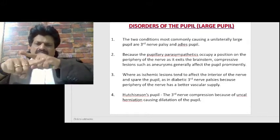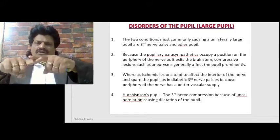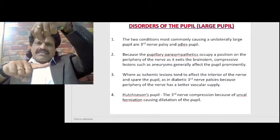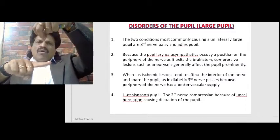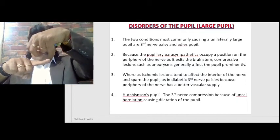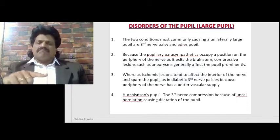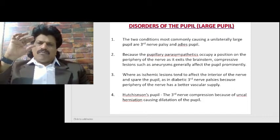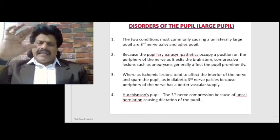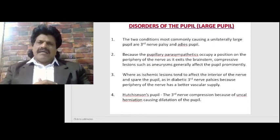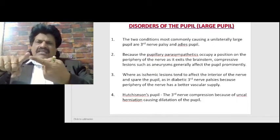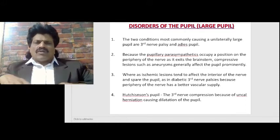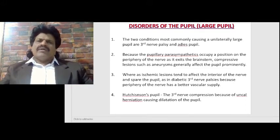Parasympathetic fibers run superficially on the third nerve, so any extrinsic compression of the third nerve — like an aneurysm or uncal herniation — will affect the pupillary parasympathetic fibers first, and therefore the pupil cannot be constricted and will be dilated. Whereas an intrinsic lesion of the third nerve, like diabetic third nerve palsy, will cause all the manifestations of the third nerve except the pupillary manifestations.